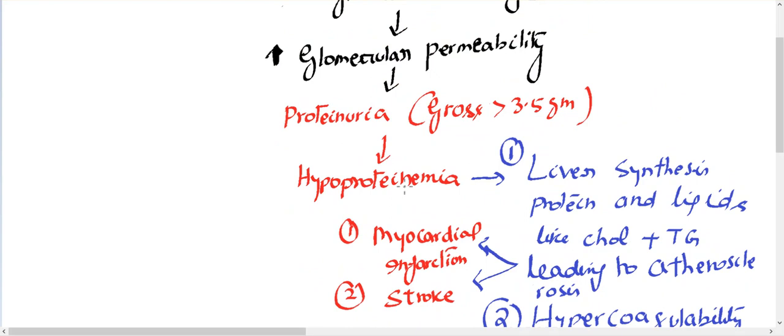All right, so what happens? The liver will start synthesizing more proteins and lipids. When the liver synthesizes more lipids, mainly in the form of cholesterol or triglyceride, that will lead to atherosclerosis.